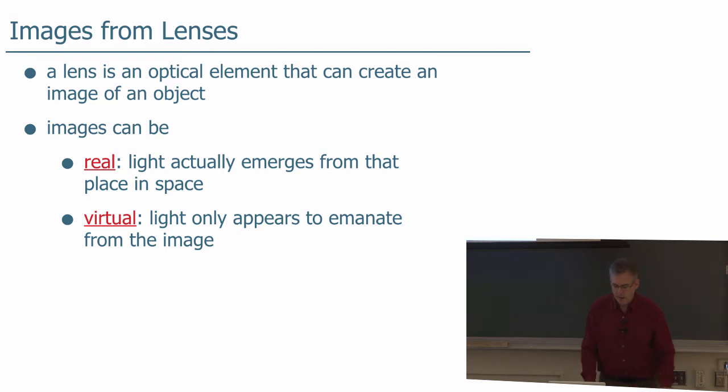Now, how do we make images from lenses? A lens is an optical element that can create an image of an object. We can have images that are real or virtual. In a real image, the light actually emerges from that place in space, and we're going to see that very vividly in the next demonstrations.